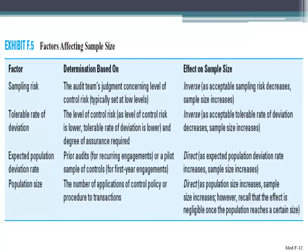The tolerable rate of deviation reflects the level of control risk and the degree of assurance the auditor requires. If you want a greater confidence level — say, 95% — you're going to reduce your tolerable rate of deviation, and as a result you're going to look at more items. It's an inverse relationship: as your acceptable tolerable rate of deviation decreases, your sample size increases, because you're willing to accept less risk and therefore need more information.